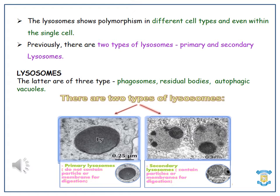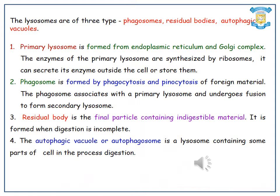The two main types of lysosomes are primary lysosomes and secondary lysosomes. The primary lysosomes do not contain particles or membranes for digestion. The secondary lysosomes contain particles or membranes for digestion. The three types of lysosomes are phagosomes, residual bodies, and autophagic vacuoles. A primary lysosome is formed from the endoplasmic reticulum and Golgi complex.